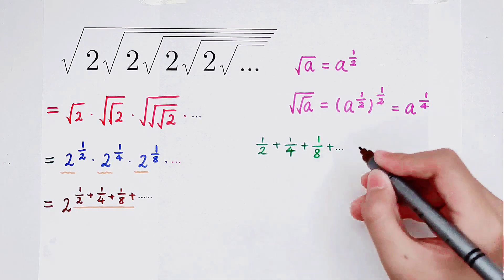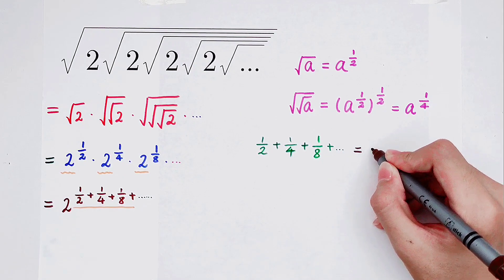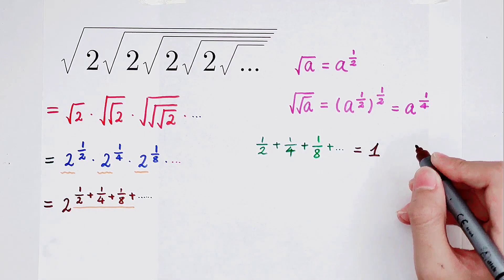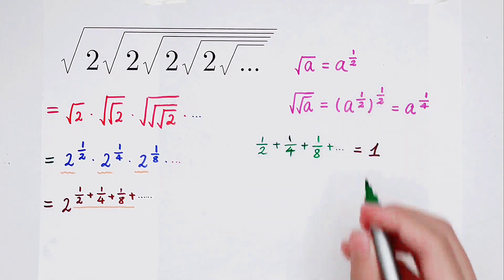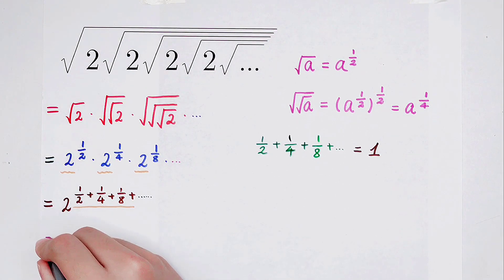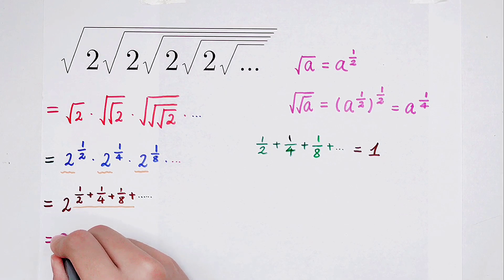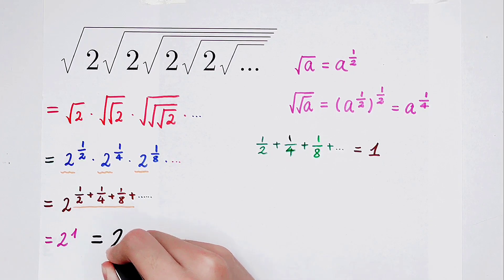Well, it's very easy — everyone knows that it is 1. So the value of this sum is 1, meaning the exponent of 2 is 1. Then it is 2 to the power 1, and the final answer is 2. Do you get it?